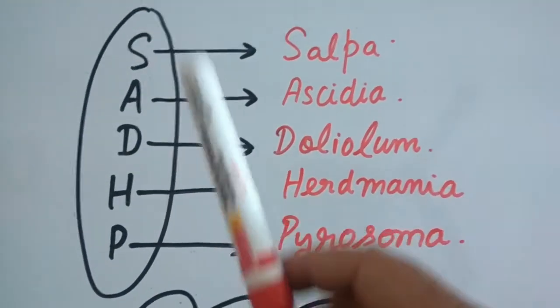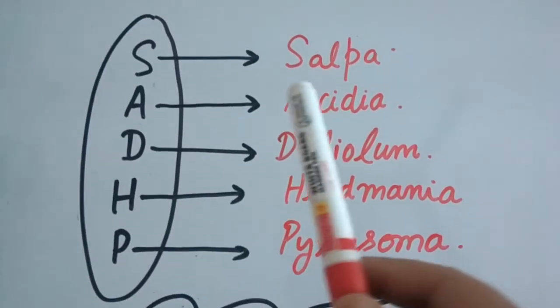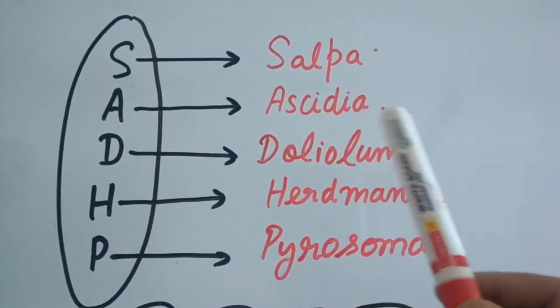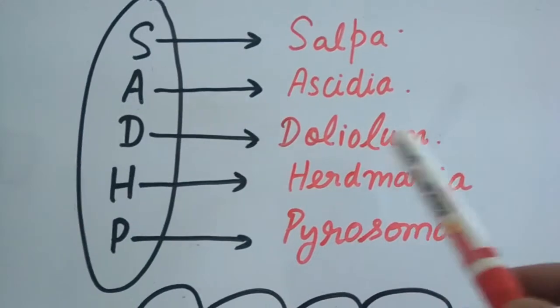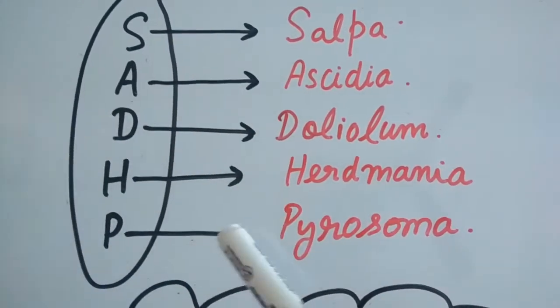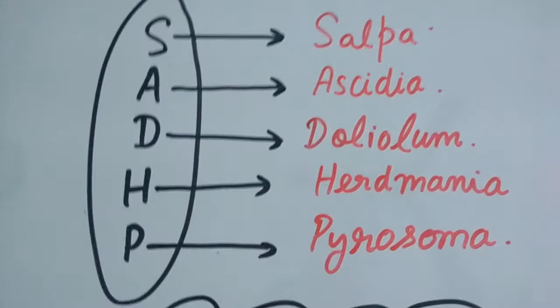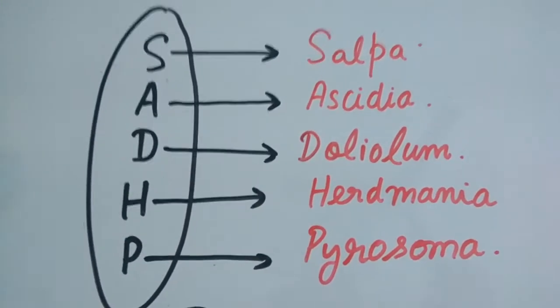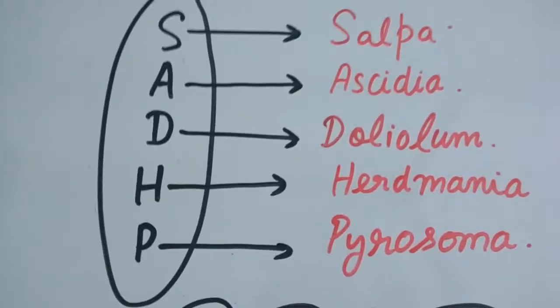As you can see, you have to write SAD HP as S for Salpa, A for Ascidia, D for Doliolum, H for Herdmania, and P for Pyrosoma. So this is the trick for Urochordata. You can take the snapshot of this particular trick.